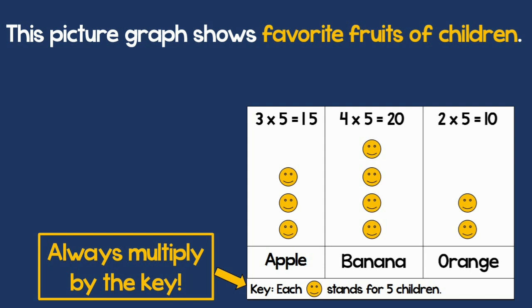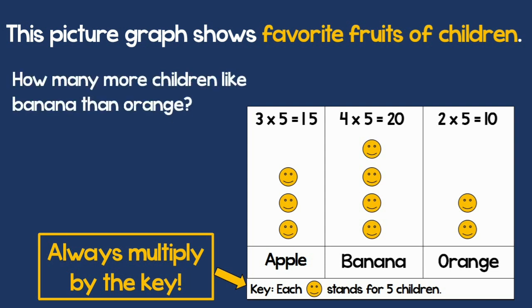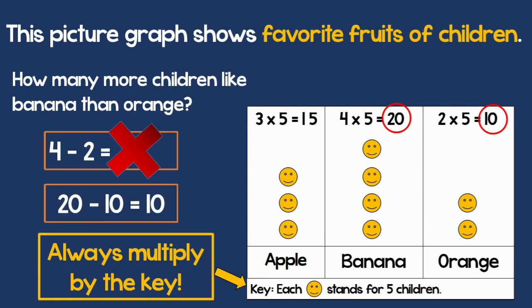Now let's have a tricky question. How many more children like bananas than oranges? Please don't say 4 minus 2, because it's not 4 children and not 2 children. It's 20 children and 10 children. So 20 minus 10 equals 10. I have to multiply by 5. This is the key.